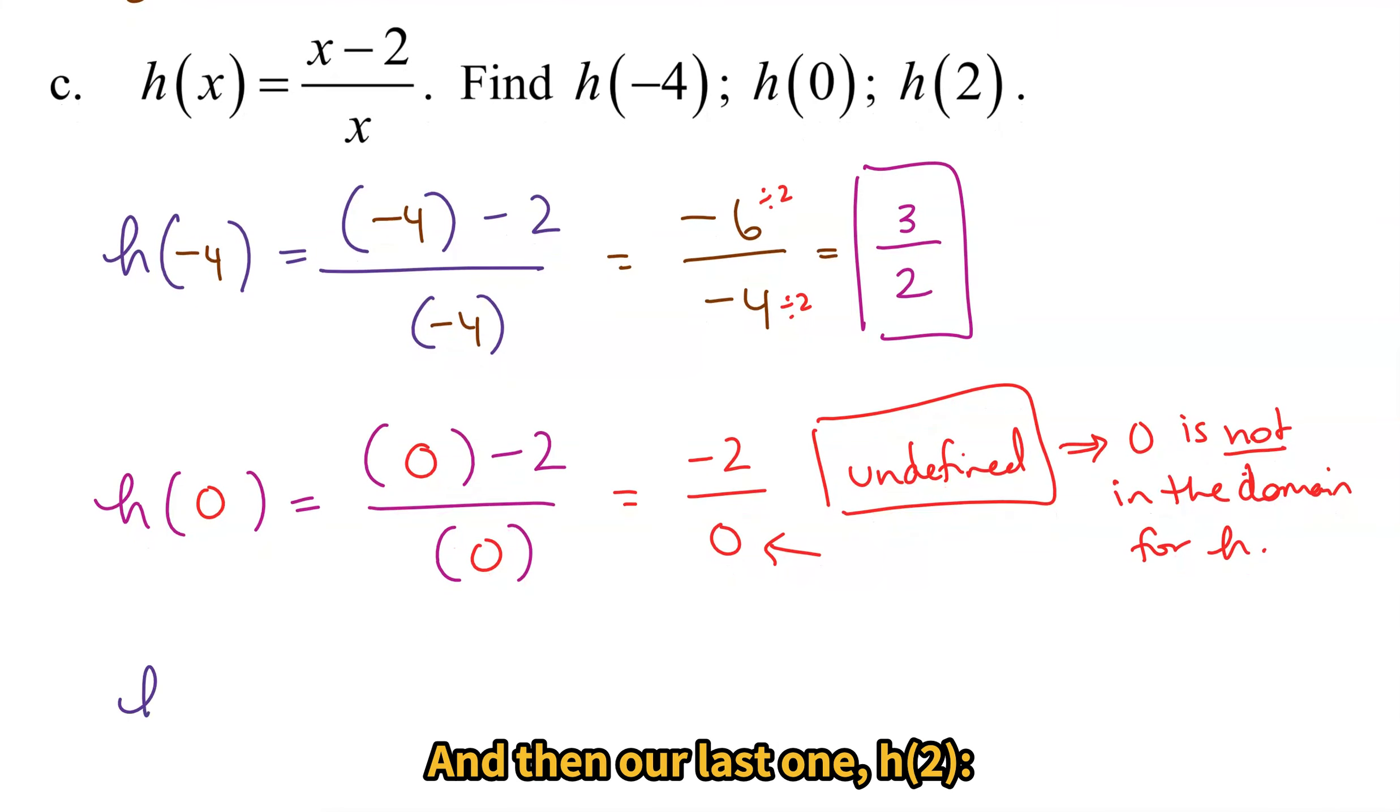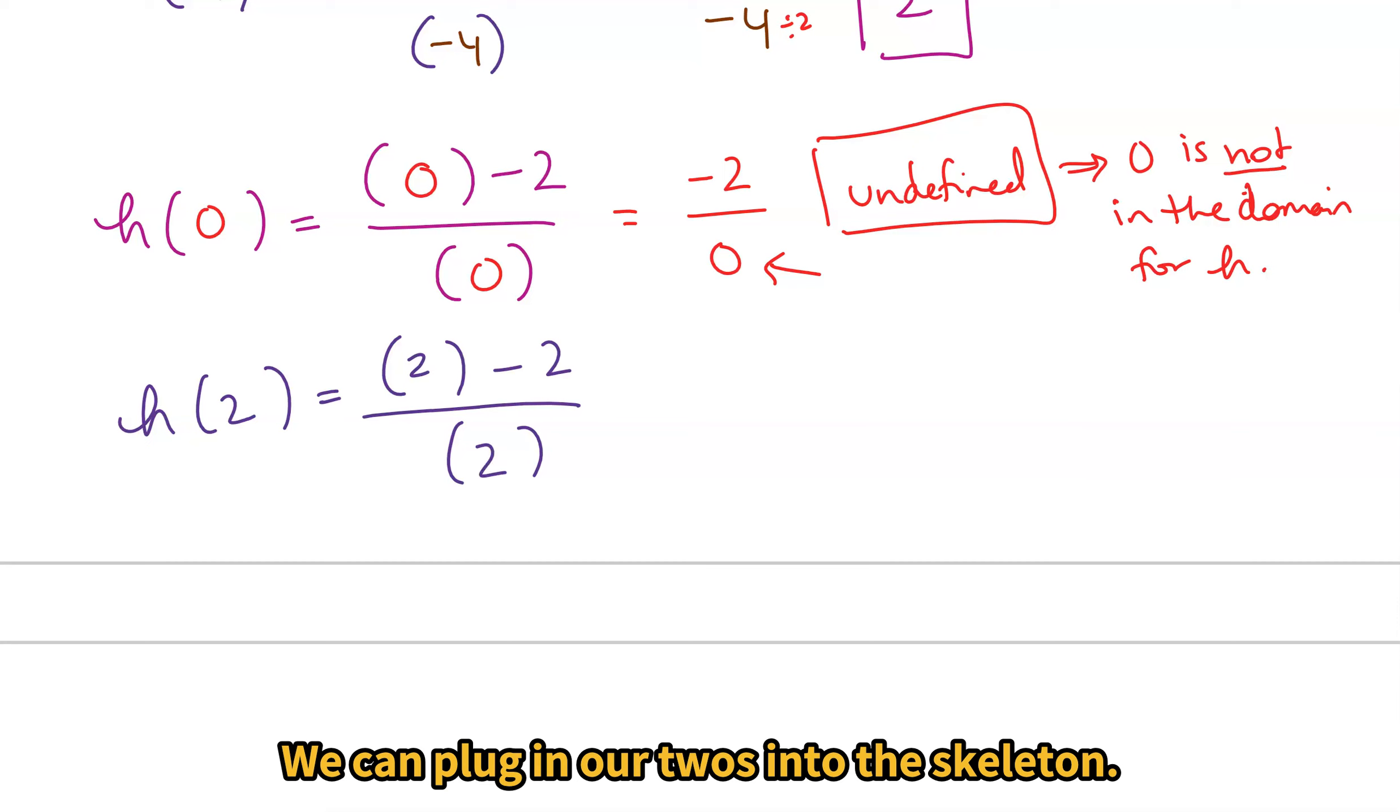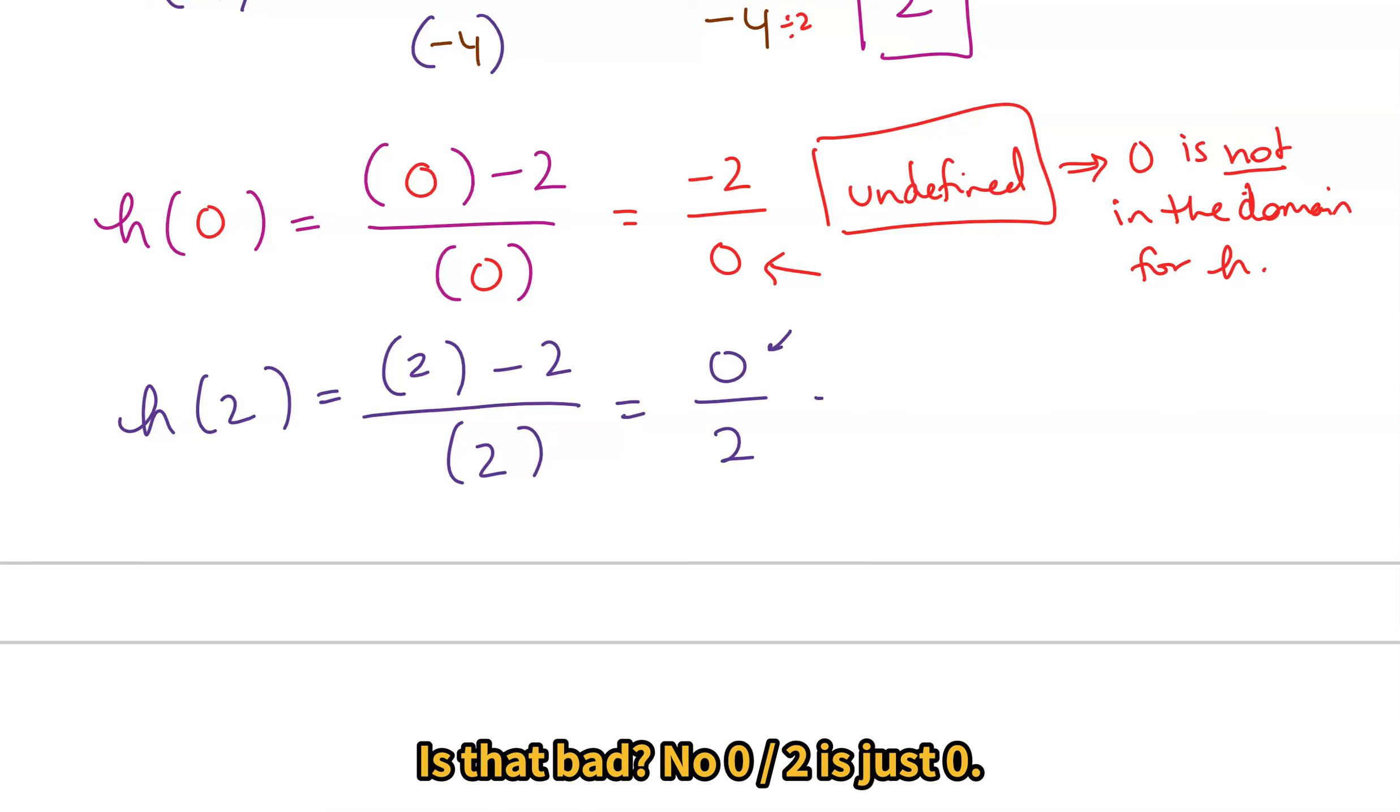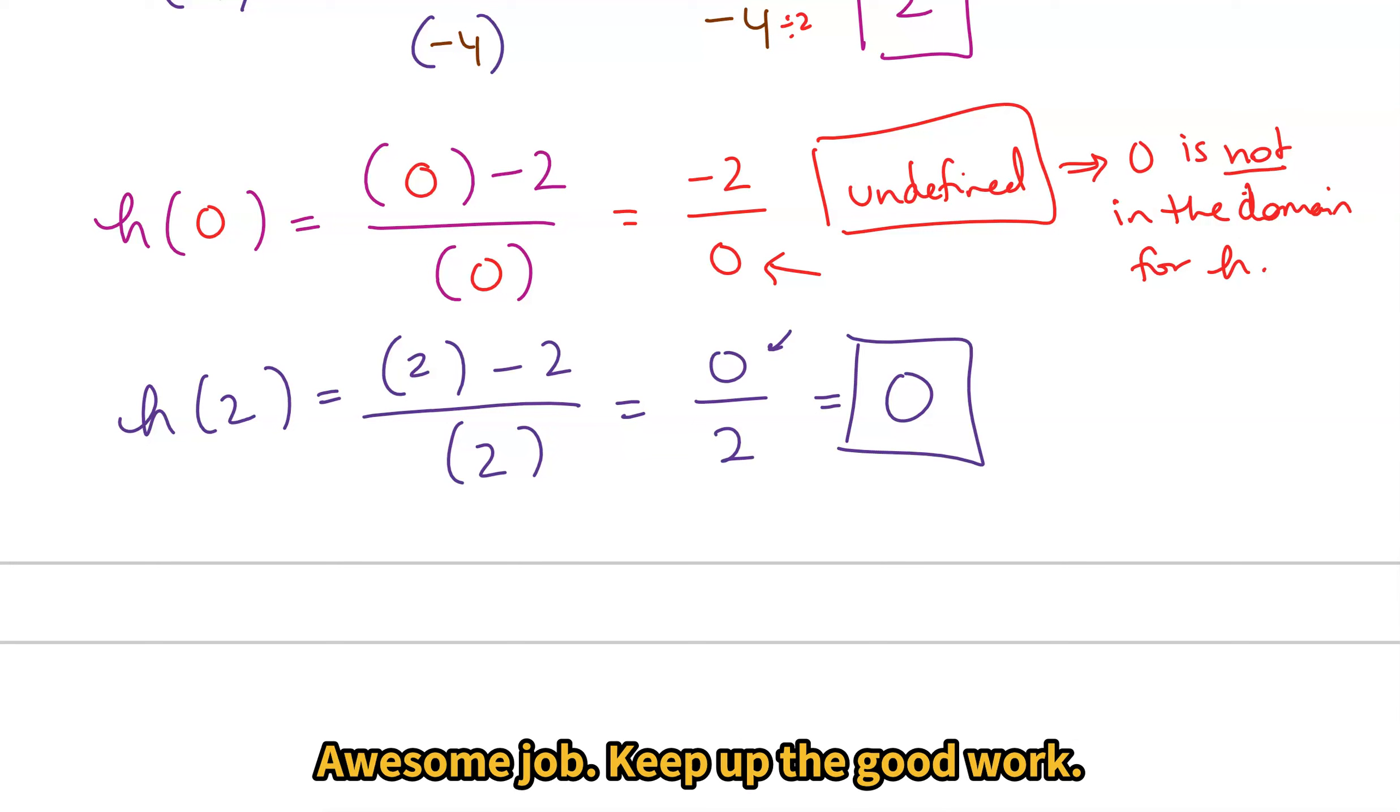And then our last one, h(2). We can plug in our 2s into the skeleton. 2 - 2 is 0. Here we have 0 on the top. Is that bad? No. 0 divided by 2 is just 0. Awesome job.